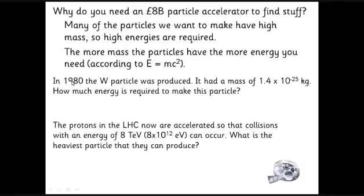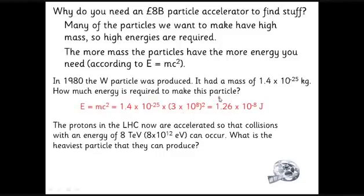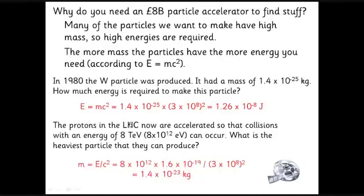The Large Hadron Collider at CERN — when first built in the 1970s — did its famous experiment in 1980 to find the W and Z particles. The W particle had a mass of 1.4 × 10⁻²⁵ kg, requiring 1.26 × 10⁻⁸ joules — a small number, but it must be delivered at the subatomic level, requiring particles to move very fast. The newer accelerator now reaches 8 tera-electron-volts — 8 × 10¹² eV.